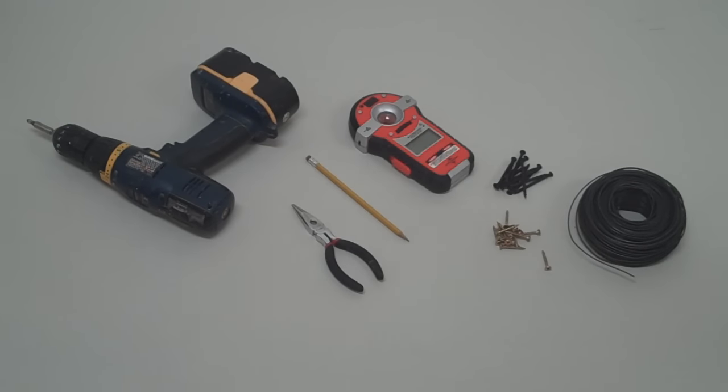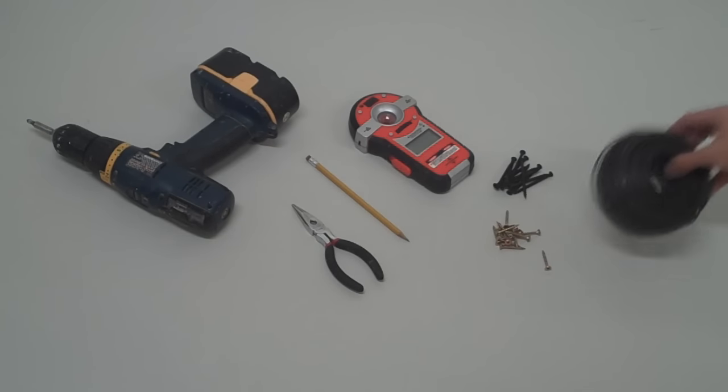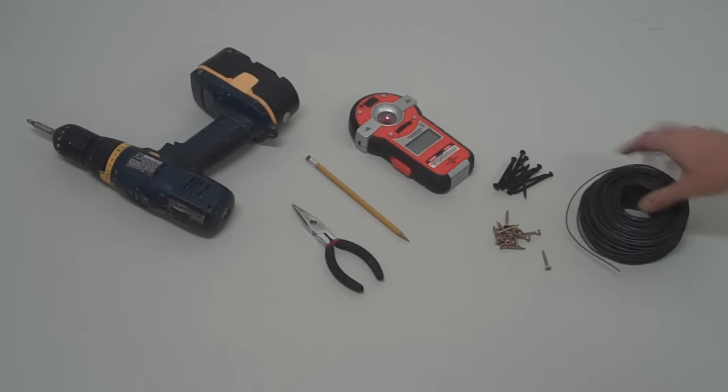The items that you will need are a spool of 16 gauge wire. You don't need quite this much. They do sell smaller amounts. It's typically found in the hardware section of your local home improvement store.